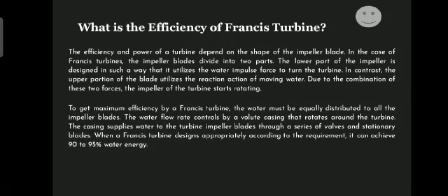The efficiency and power of a turbine depend on the shape of the impeller blade. In the Francis turbine, the impeller blades are divided into two parts. The lower part utilizes the water impulse force to turn the turbine, while the upper portion utilizes the reaction of moving water. Due to the combination of these two forces, the impeller starts rotating. To get maximum efficiency, water must be equally distributed across all impeller blades, with flow rate controlled by a volute casing. When designed appropriately, a Francis turbine can achieve up to 90 percent water energy efficiency.